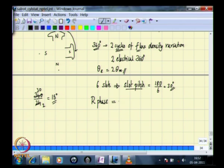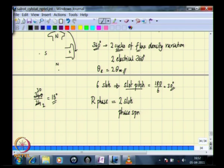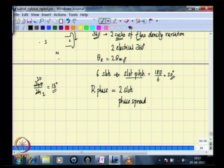The R phase occupies two slots, distributed over two slots, and the electrical angle equivalent to the number of slots over which a particular phase winding is distributed is called the phase spread. This is standard material you would have seen in earlier courses on electrical machines — this is just a review of the relevant terms. In the animation we have seen, this is a 60-degree phase spread winding.